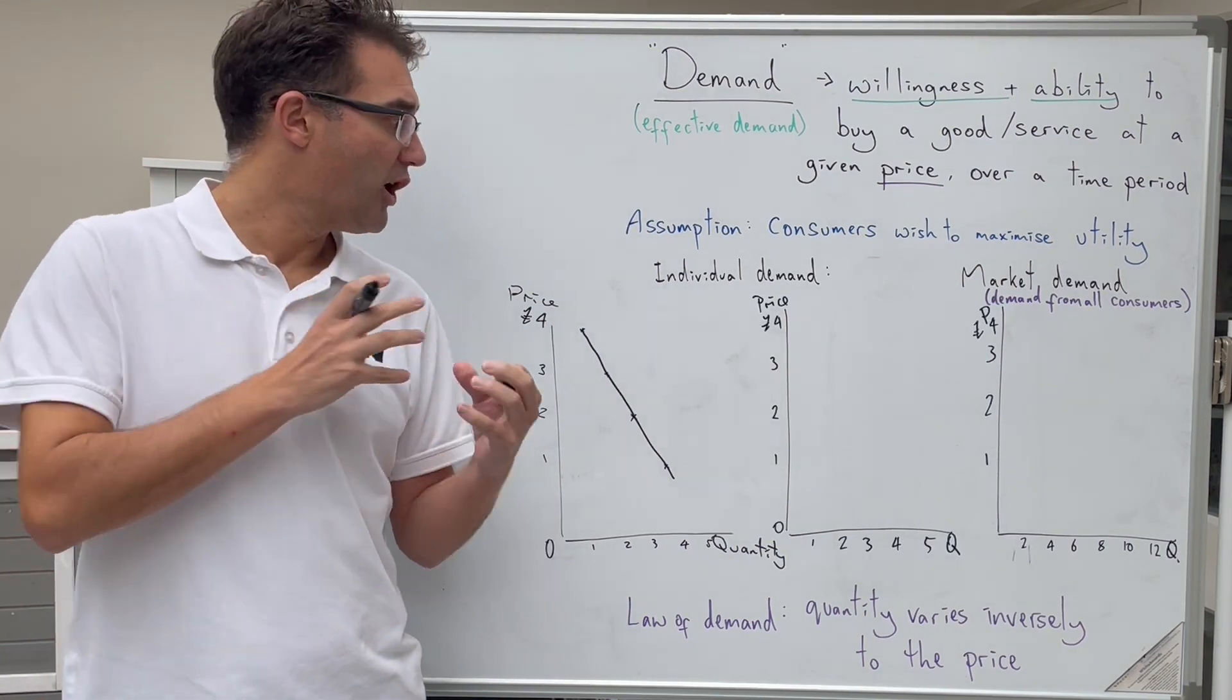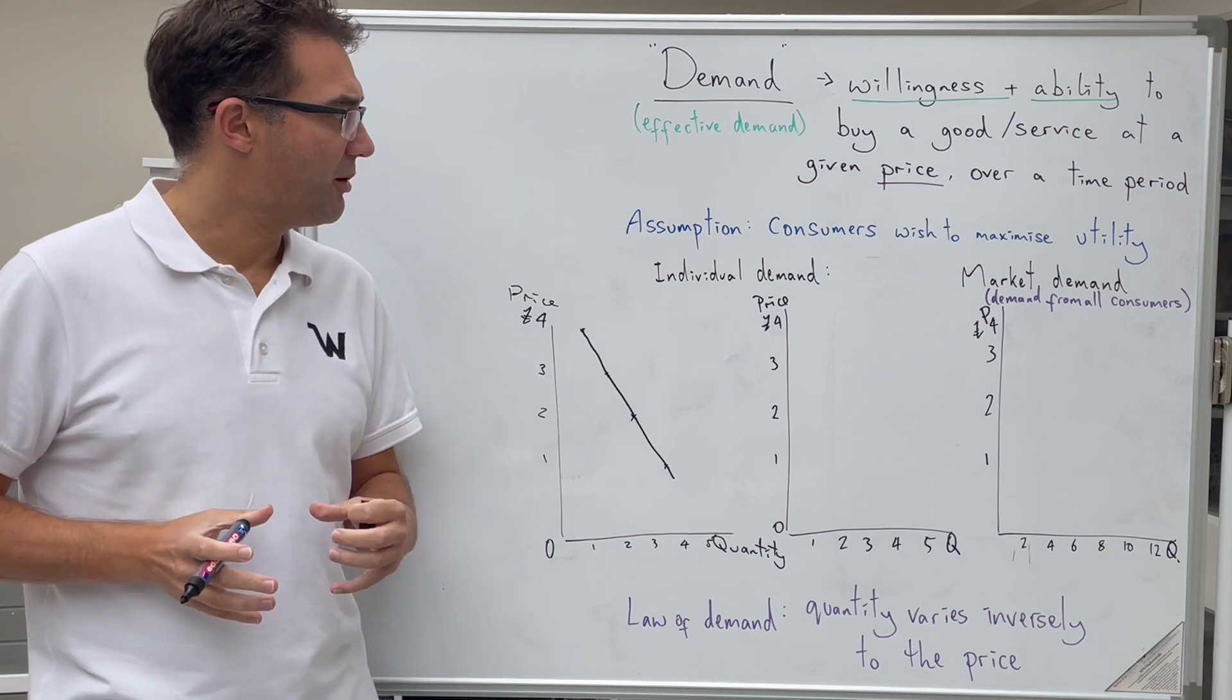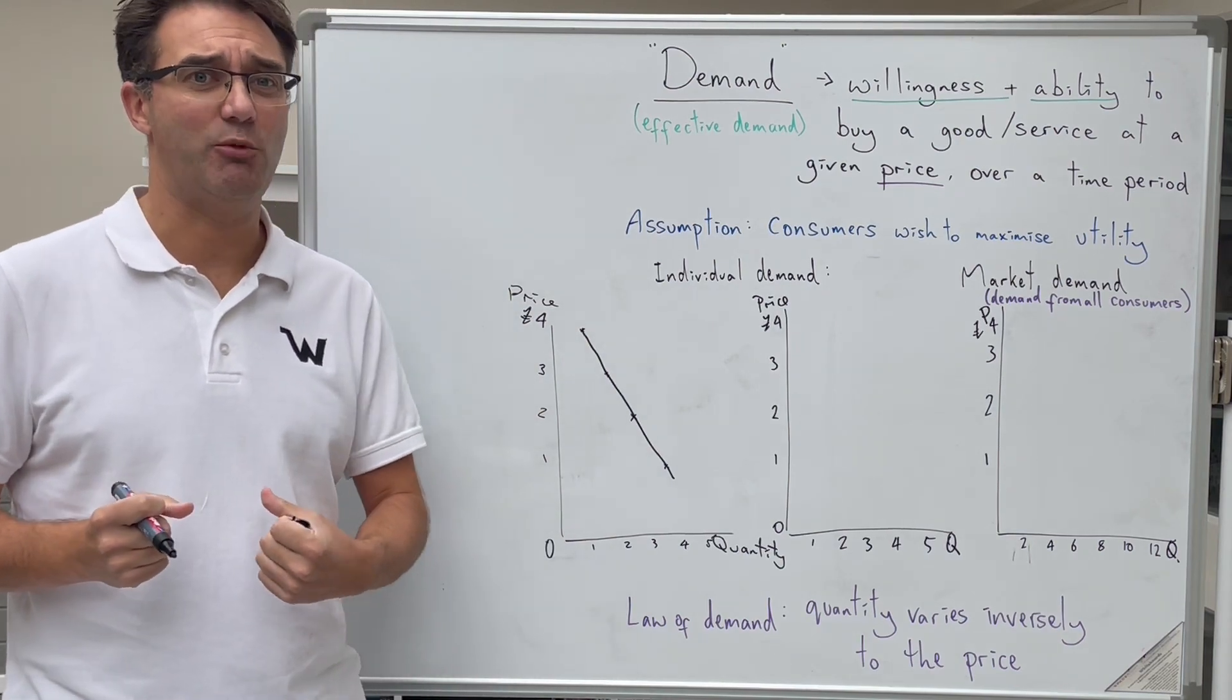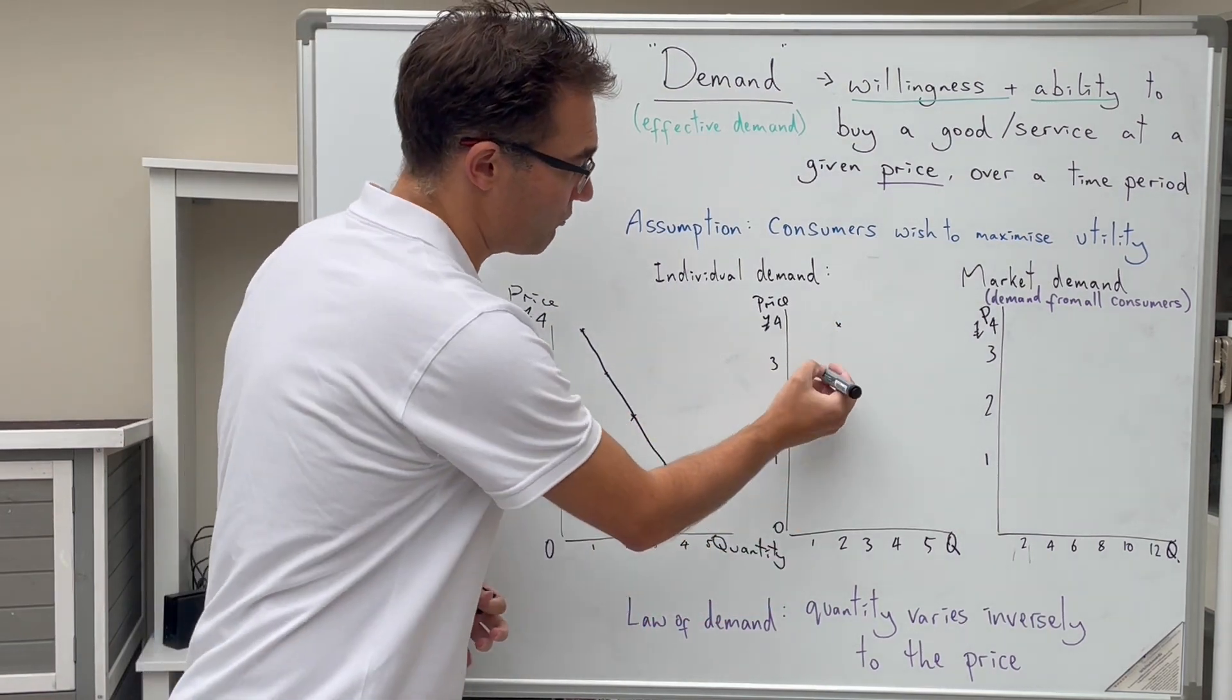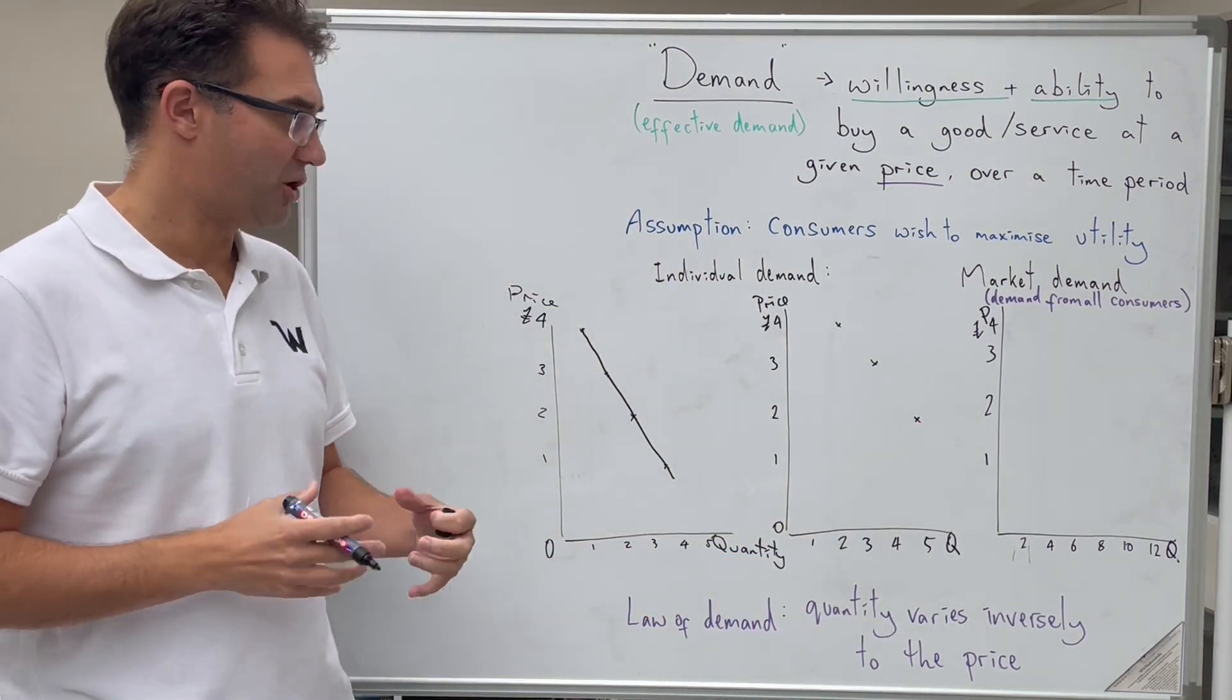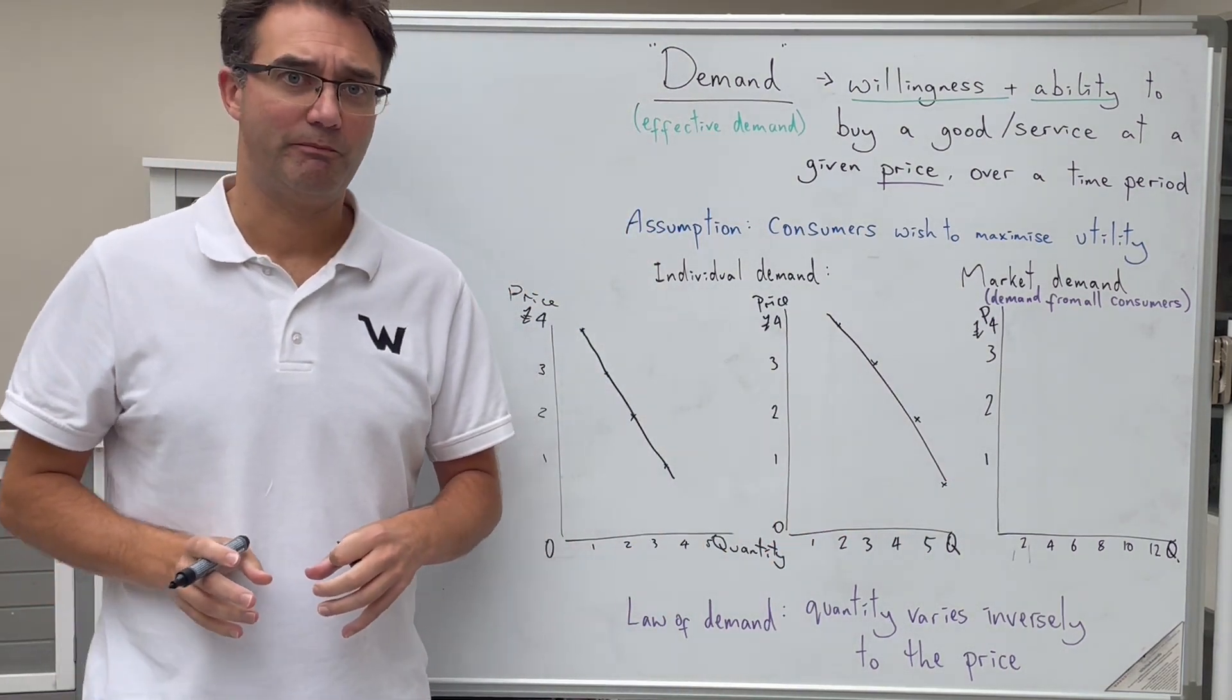Now that's my individual demand curve, but there's lots of other people, lots of other consumers, and they will have their own individual demand curves. For example, we could look at another individual and we could say if the price was four pounds, they might be more willing to buy sandwiches. They really love a good sandwich. At four pounds, they're going to buy two a week. At three pounds, they'll buy three a week. At two pounds, they'll buy four a week. And at one pound, they're going to buy five a week. So they have got a different individual demand curve.